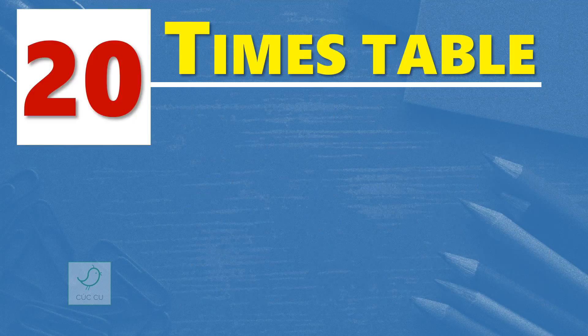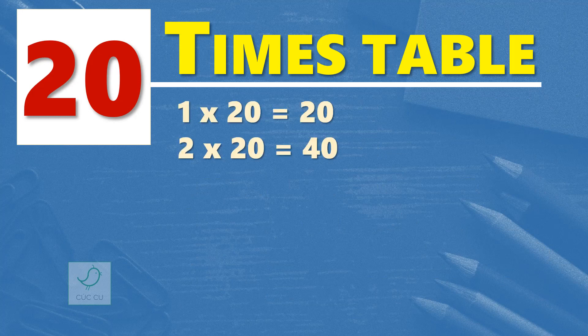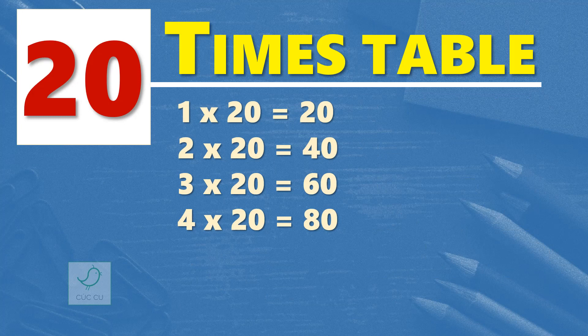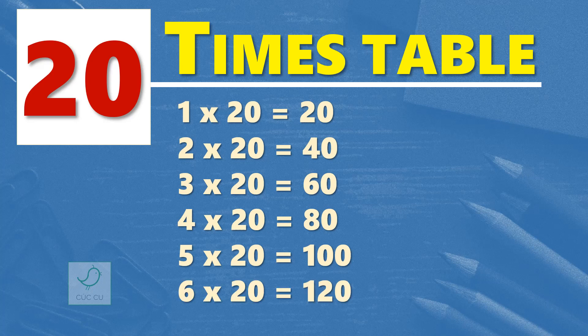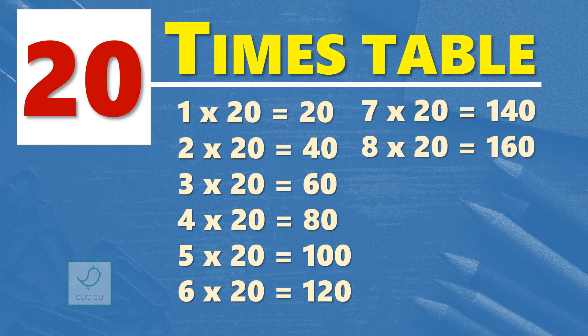20 times table. 1 times 20 is 20. 2 times 20 are 40. 3 times 20 are 60. 4 times 20 are 80. 5 times 20 are 100. 6 times 20 are 120. 7 times 20 are 140. 8 times 20 are 160.